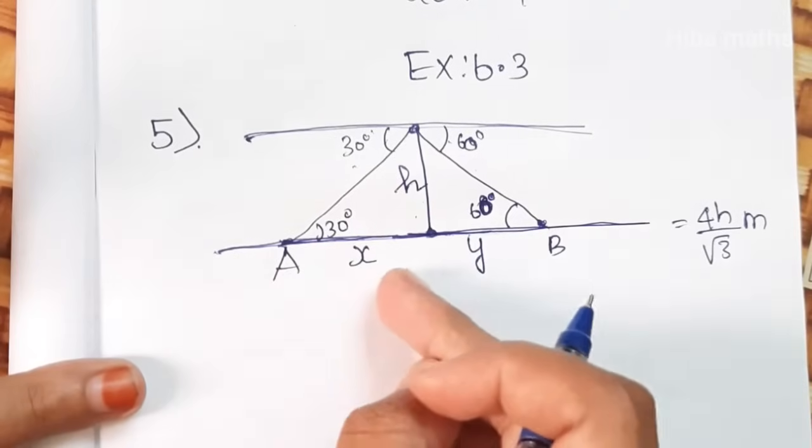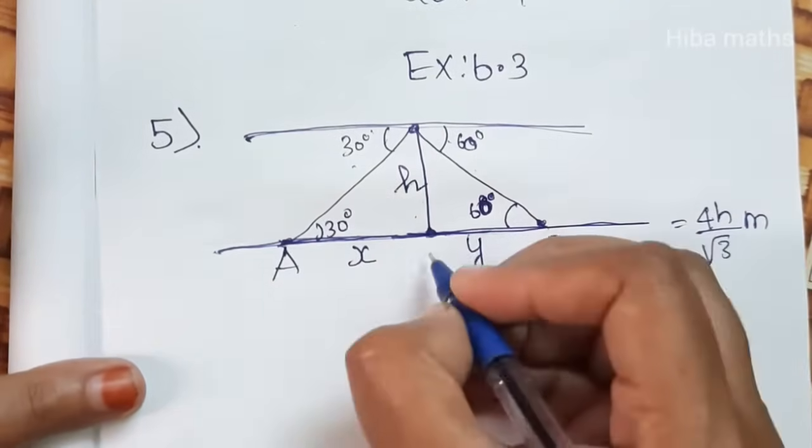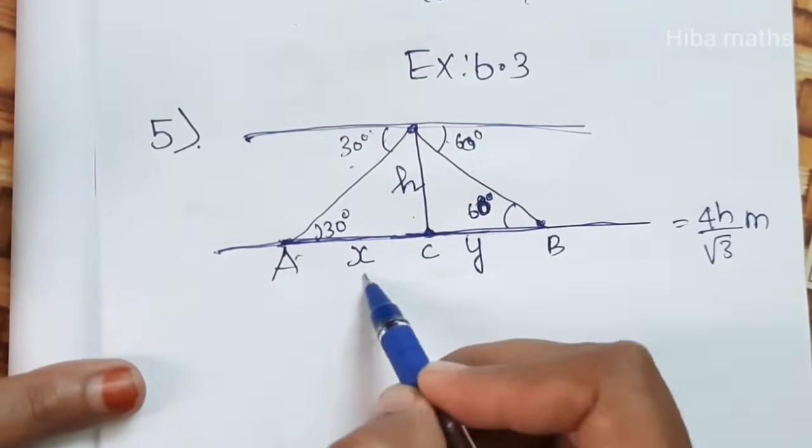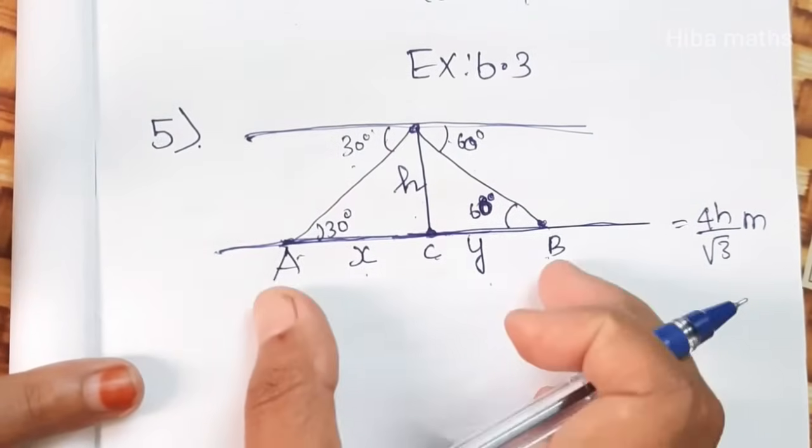So we have two gaps. AC is x, then CB is y. Now we have two distances, we will add to get 4h by root 3.